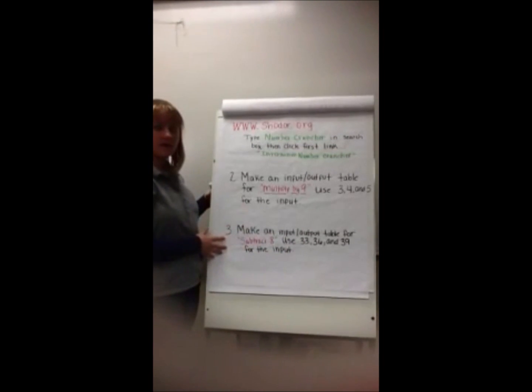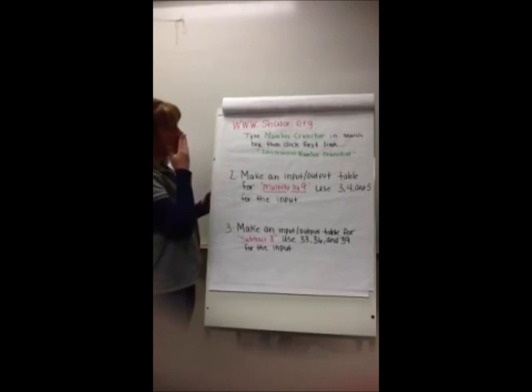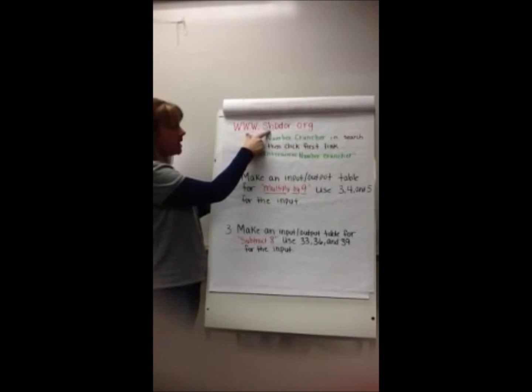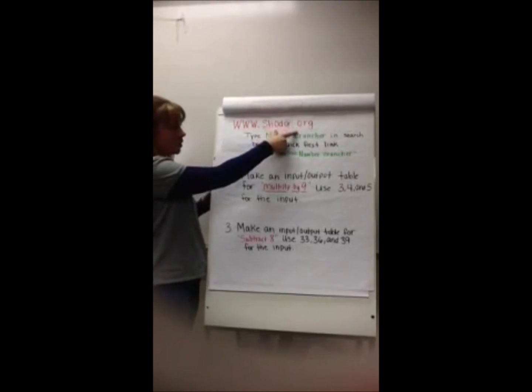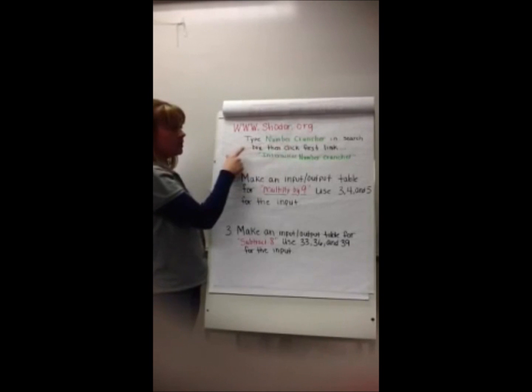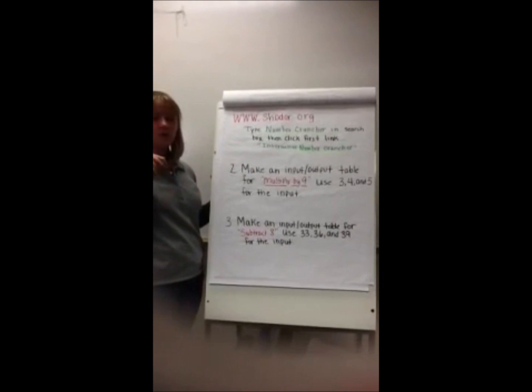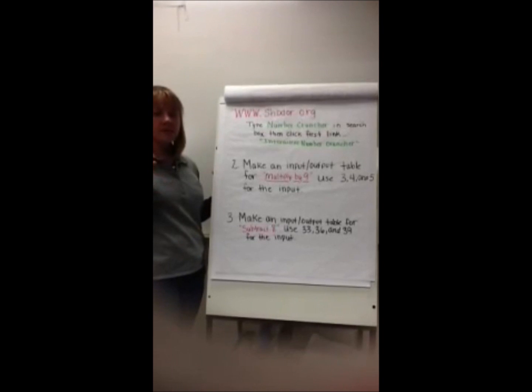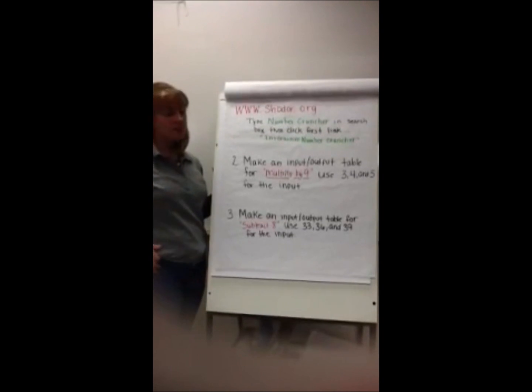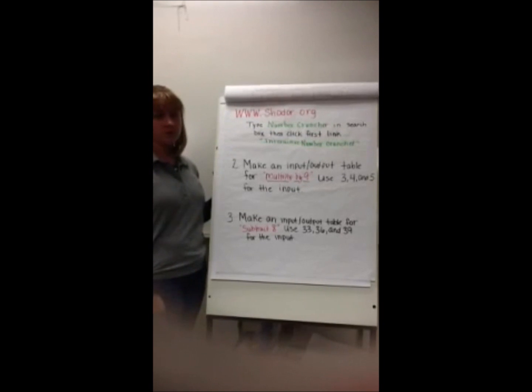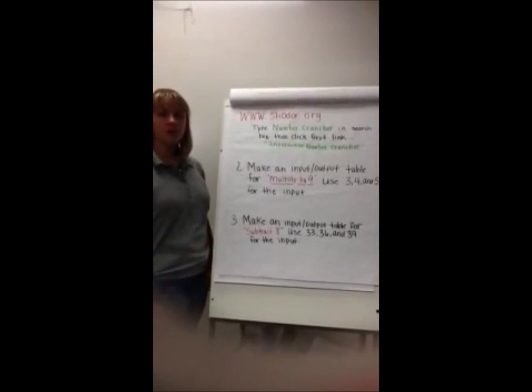Bring this with you to class tomorrow, completed, and in your journal. And also you can go to this website, www.fhodor.org. You'll type in Number Cruncher in the search box. Then click the first link, Interactive Number Cruncher. You'll pull up a page where you type in a number and push enter. And you'll do that a couple of times and it will ask you what the rule is. You'll want to write down at least two of those and bring them with you to class. And I will see you all tomorrow. Bye-bye.